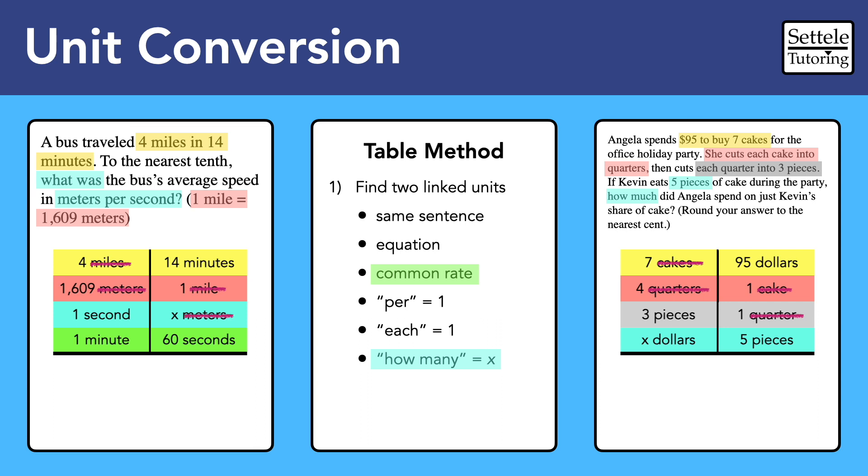There are a few twists that you might encounter along the way. If a pair of units only has one number, then it's probably the case that the missing number is one. Words like each and per tell us to include the number one with our unit. For example, 30 miles per hour is 30 miles per one hour.